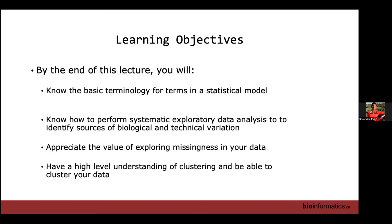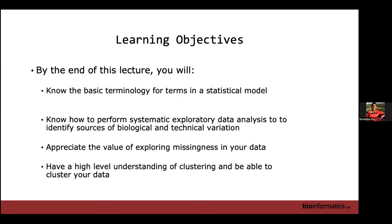Learning objectives: by the end of this lecture, you will know the basic terminology for terms in a statistical model. We're going to go through it conceptually — you need to conceptually understand what's going on. You will know how to perform systematic exploratory data analysis, not just do a bit of this, a bit of that. So a systematic checklist of how to explore your data to identify sources of wanted and unwanted variation. You will appreciate the value of exploring missingness in your data, and have a high-level understanding of clustering.